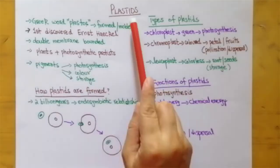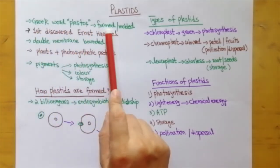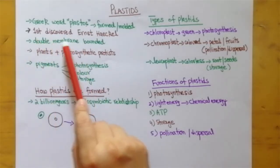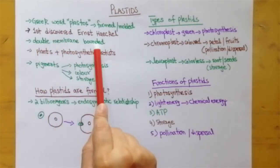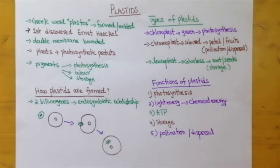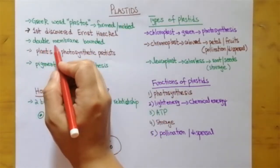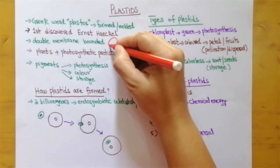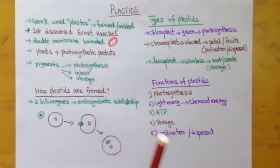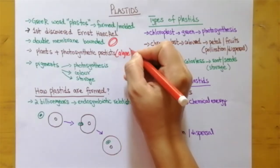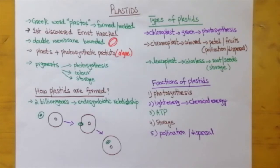Today's lesson is about the structure and function of plastids. The word 'plastid' comes from the Greek word meaning 'formed' or 'molded.' It was first discovered by Ernst Haeckel. Plastids are double-membrane-bounded structures — similar to the nucleus, they have an outer membrane and an inner membrane. Plastids are only present in plants or photosynthetic organisms such as algae. They are not present in animal cells, which is one distinguished feature between plant and animal cells.